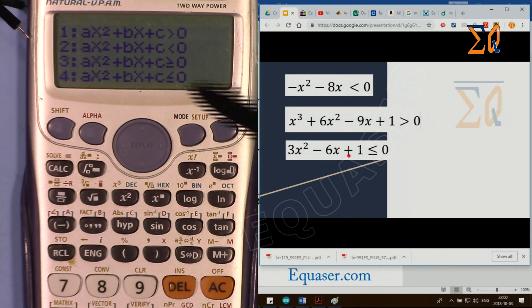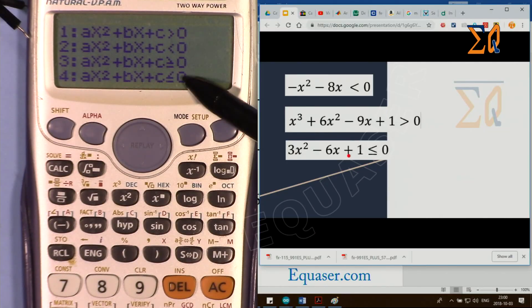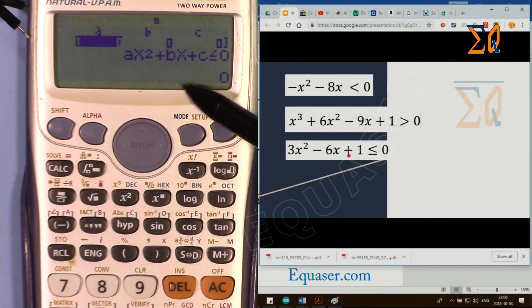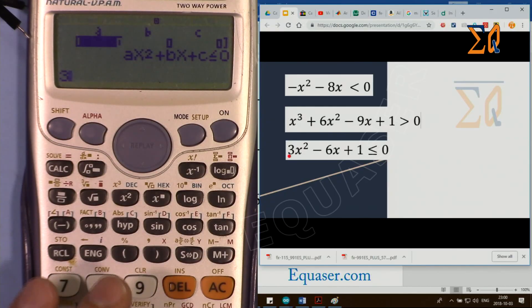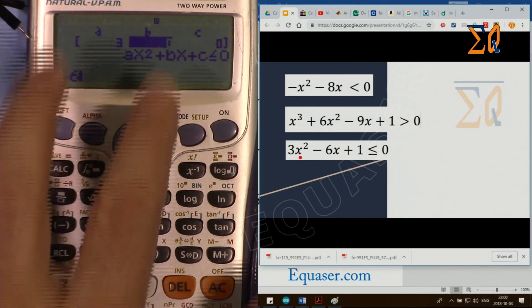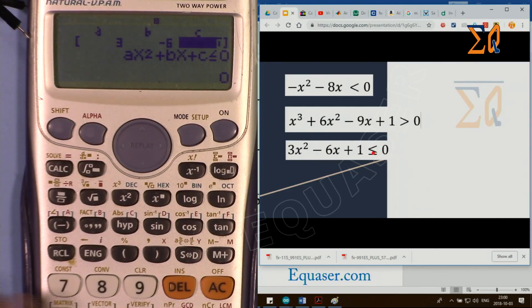This time we're selecting number 4, smaller or equal. Then a is 3, press equal, and then −6, that's for b, and then 1 is for c.